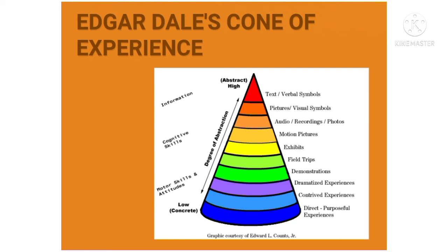This experience allows students to see the meaning and relevance of things based on different pictures and representations. The next levels would be television and motion pictures, and still pictures, recordings, and radio. Because of the rapid development of modern technology, many people believe that educational technology is limited to these stages, not aware that these stages are only a small portion of educational technology. Television and motion pictures imply values and messages through television and films, while still pictures, recordings, and radio are visual and audio-visual symbols.